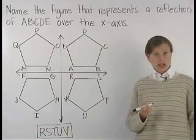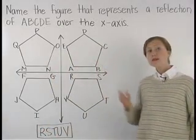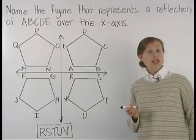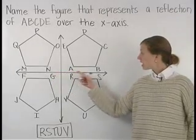You can check your answer by drawing ABCDE on a sheet of paper and folding the paper in half along the x-axis.